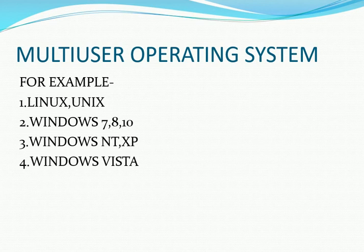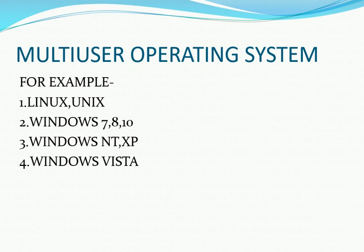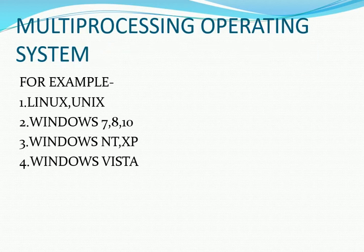Next is multi user operating system. A multi user operating system allows multiple users to use the same computer at the same time or at different times. For example, Linux, Unix, Windows 7, 8, and 10, Windows NT, XP, and Windows Vista.